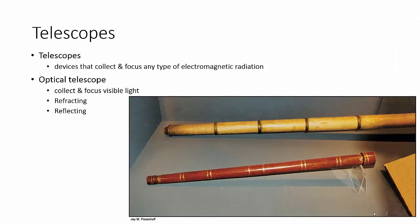All right, so what is the point of telescopes? Basically, telescopes are devices that collect and focus any type of electromagnetic radiation. This picture here is a picture of an optical telescope. It collects and focuses visible light. For optical, there's actually two types: refracting or reflecting.